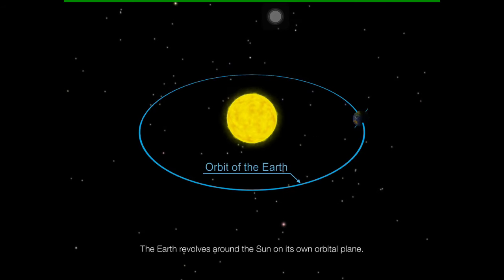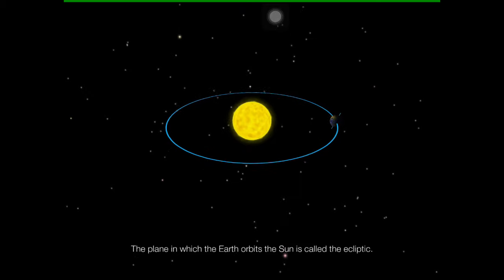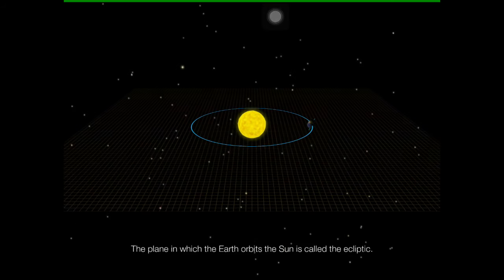The Earth revolves around the Sun on its own orbital plane. The plane in which the Earth orbits the Sun is called the Ecliptic.